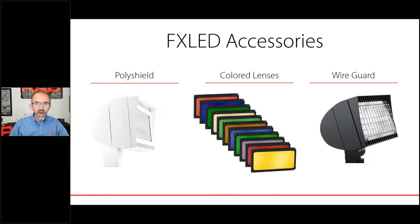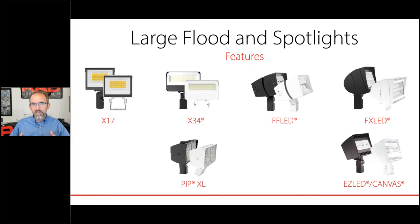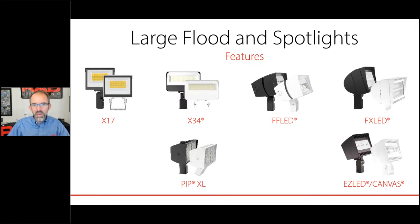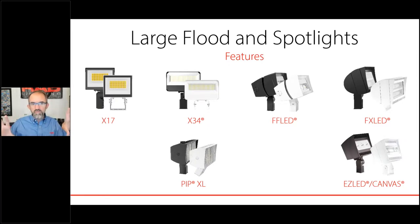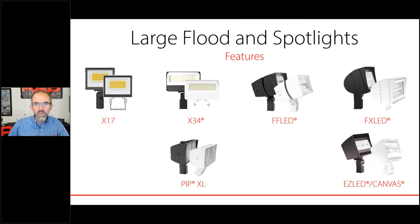Looking at the different families side by side: the X17 has 12 SKUs, X34 has 24, the PIP family around 315, the FF family is 1,500, and the FX group on the right is about 2,500 different options. As you go from left to right — economy families with limited warranty offering floods or wide floods only — to the right where you have full warranty with multiple distributions, it expands your ability to do different things.